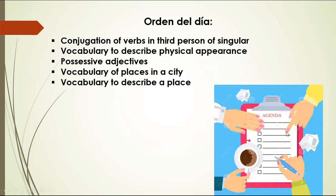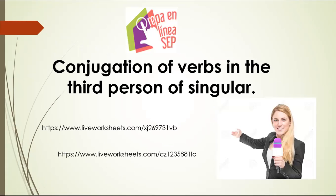This is the agenda for today's session. We'll see the conjugations of verbs in third person singular. We'll also look at vocabulary to describe physical appearance, possessive adjectives, vocabulary of places in a city, and vocabulary to describe a place. That is what we are going to look at in this last session of module six.